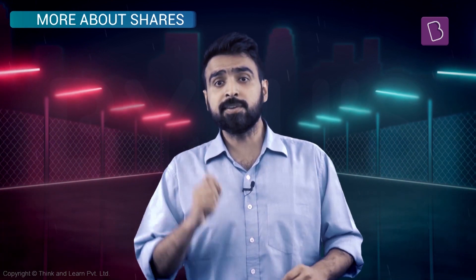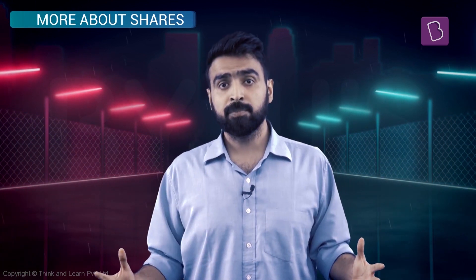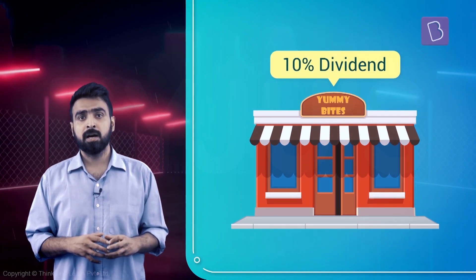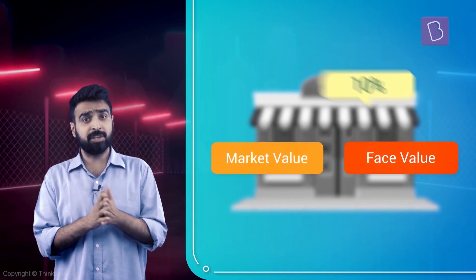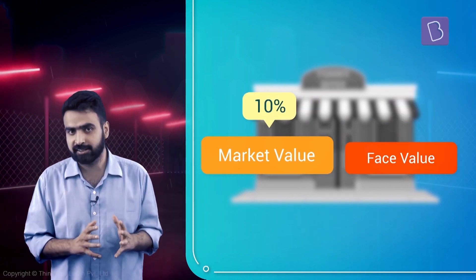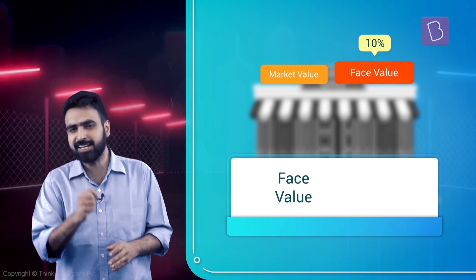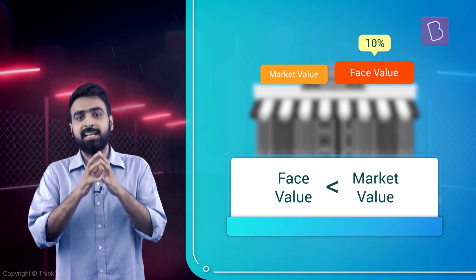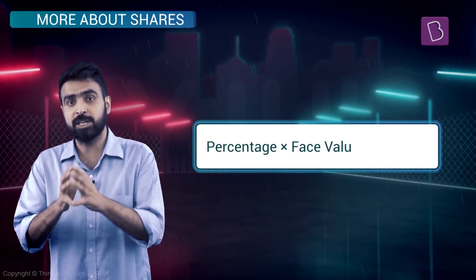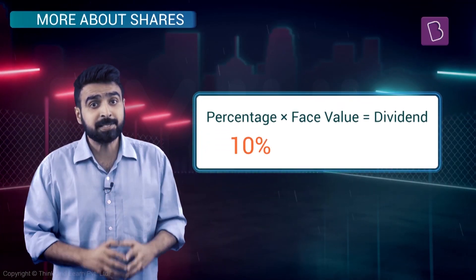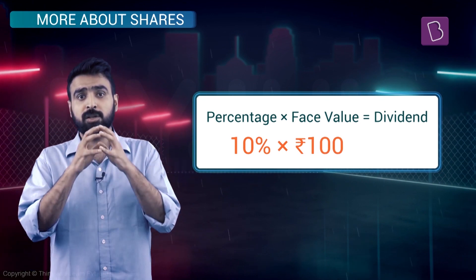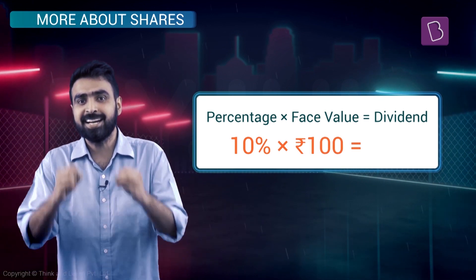Sometimes this dividend is given as a percentage. So the company says they will declare 10% dividend — but 10% of face value or 10% of market value? Companies play smart here. Since face value is generally lower than market value, they declare it on the face value. So it is always percentage into face value. At 10% rate with a face value of 100 rupees, the dividend amount comes out to be 10 rupees.